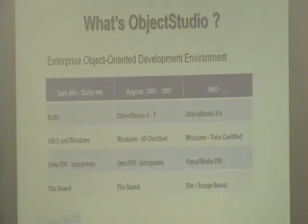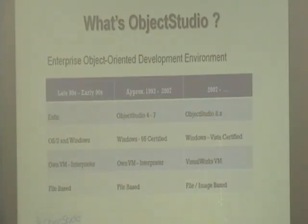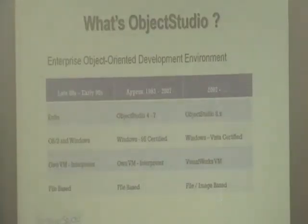In the late 80s and early 90s, when I first started working with Object Studio, it was called Anthony. It was OS/2 or Windows based. It had its own VM, which was an interpreter. And very importantly, it was file-based — I think it was one of the only Smalltalk tools at the time that was file-based.